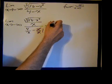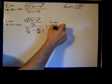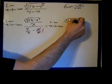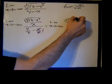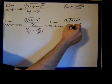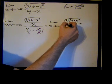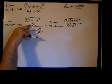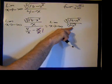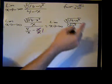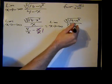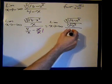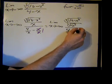Then we'll move this x into the cube root by rewriting it as the cube root of x cubed. So we have the limit as x approaches negative infinity of the cube root of 16 minus x squared divided by the cube root of x cubed. As x goes to negative infinity, the cube root of x cubed is also negative, so there's no need to multiply by negative 1 or anything like that. So the denominator is 4 over x minus 1.